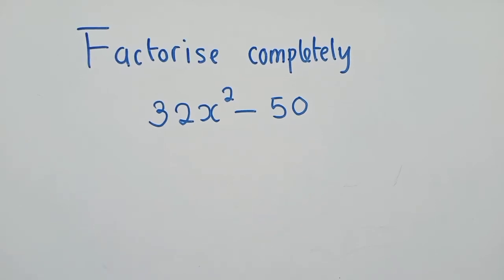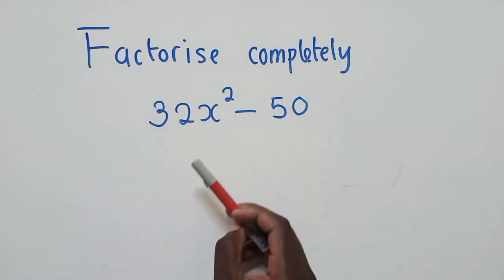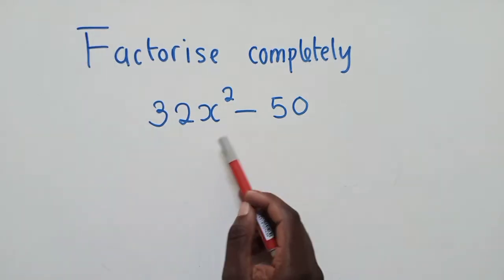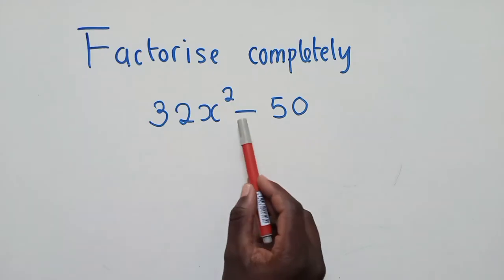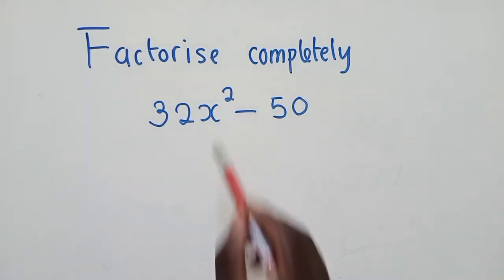Alright, so to factorize this one, we've been told to factorize completely. So we must use the idea of difference of two squares. How did I know that I'm supposed to use the idea of difference of two squares? It's because of the minus sign and the power 2 here.